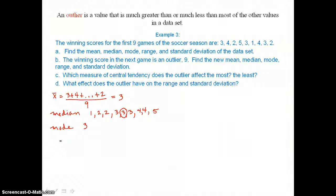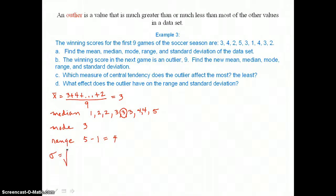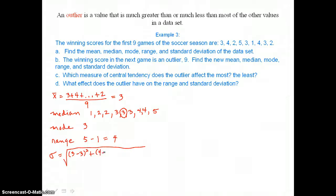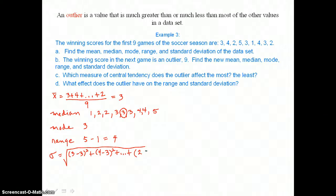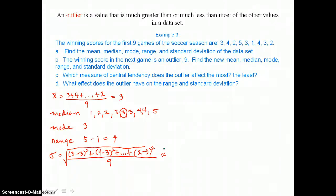For the range, we subtract 5, the largest score, minus 1, the smallest, giving a range of 4. For the standard deviation, sigma, we set up the formula: each score minus the mean of 3, squared, all the way through to the last value, divided by 9. Approximating to one decimal place, we get a standard deviation of 1.2.